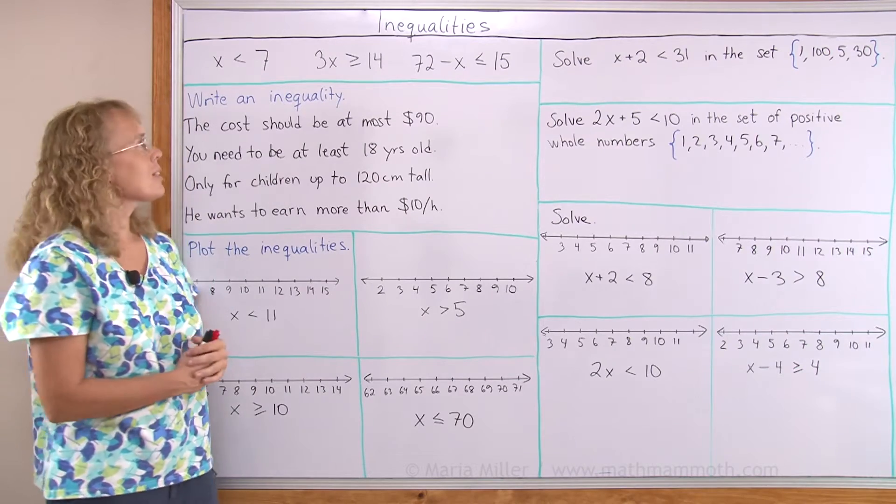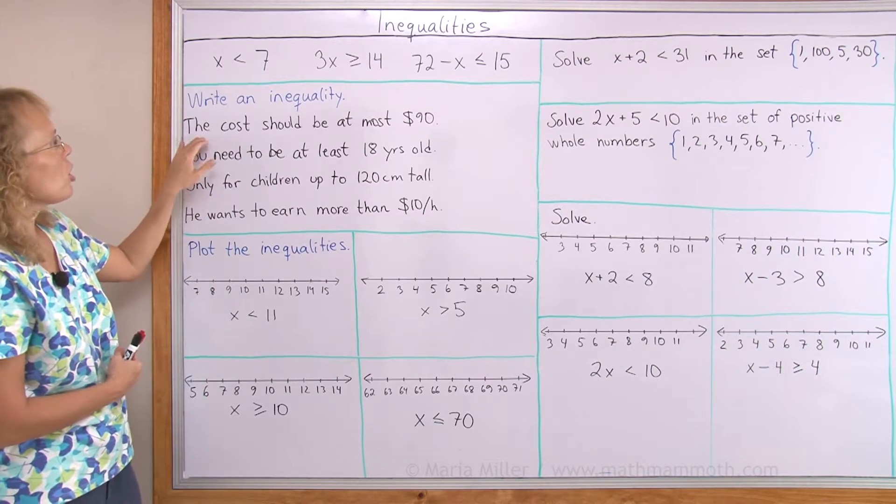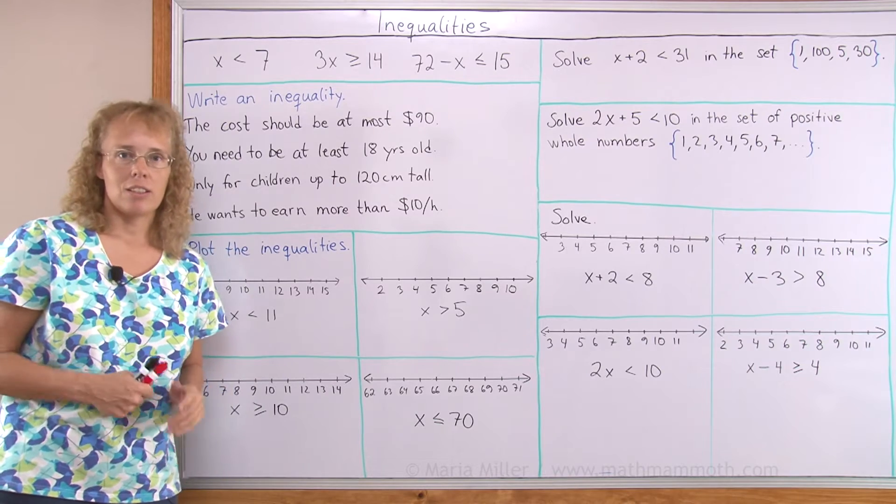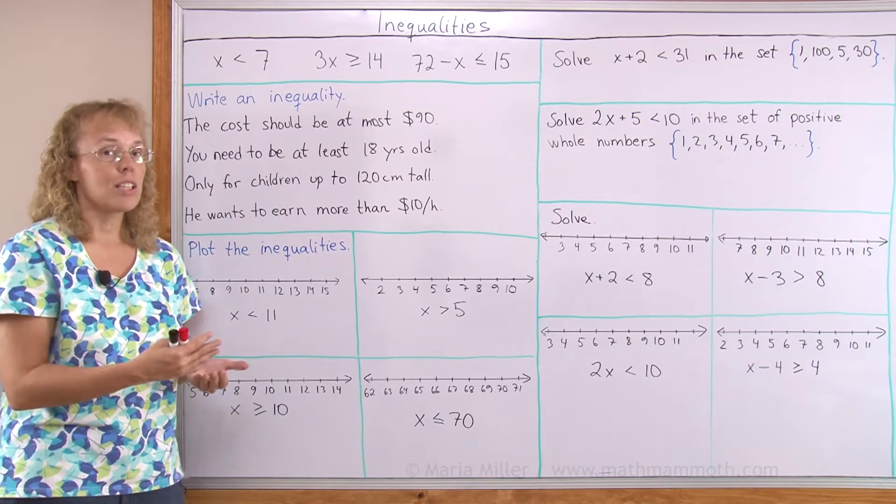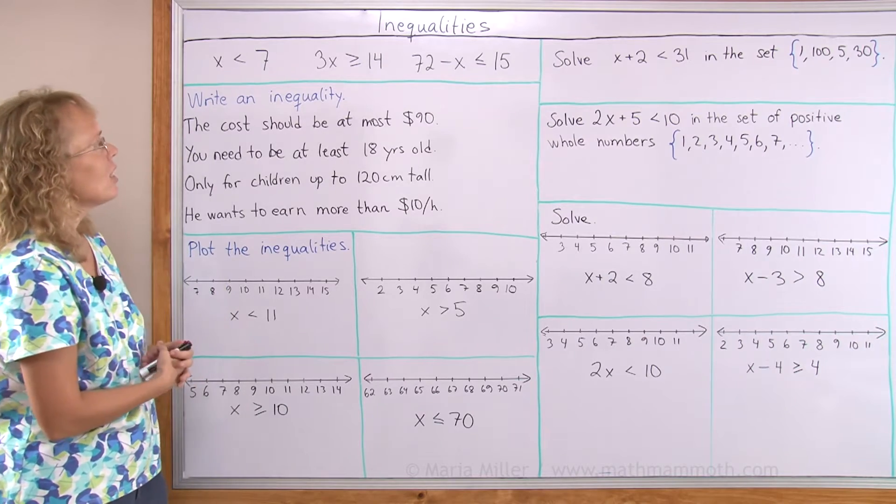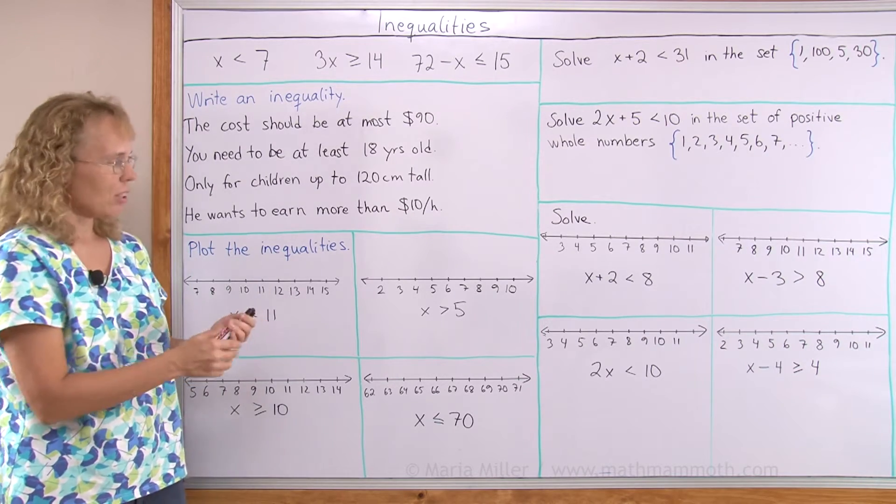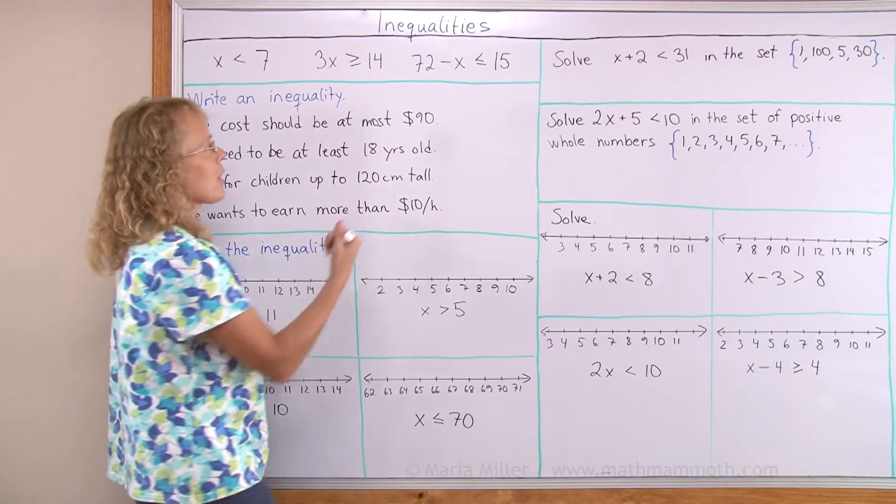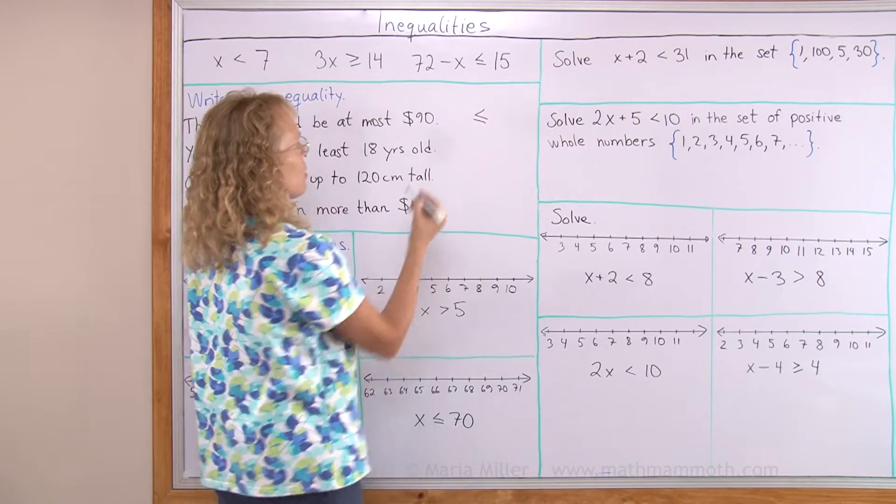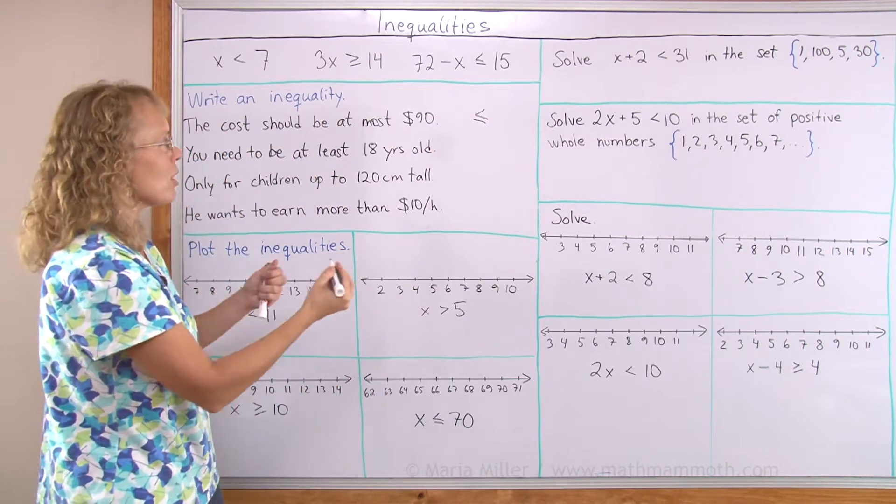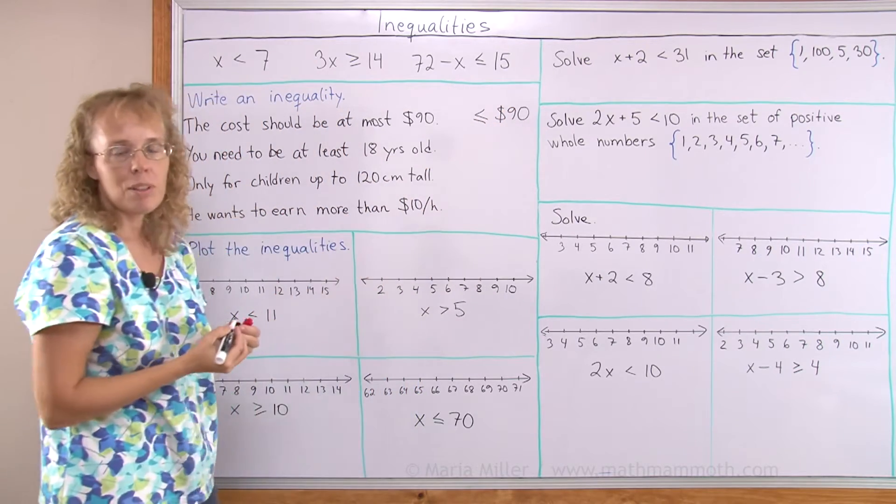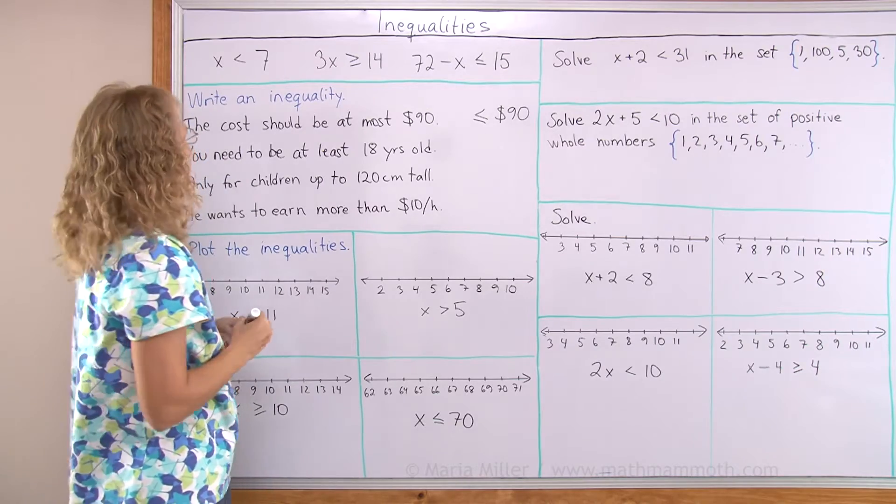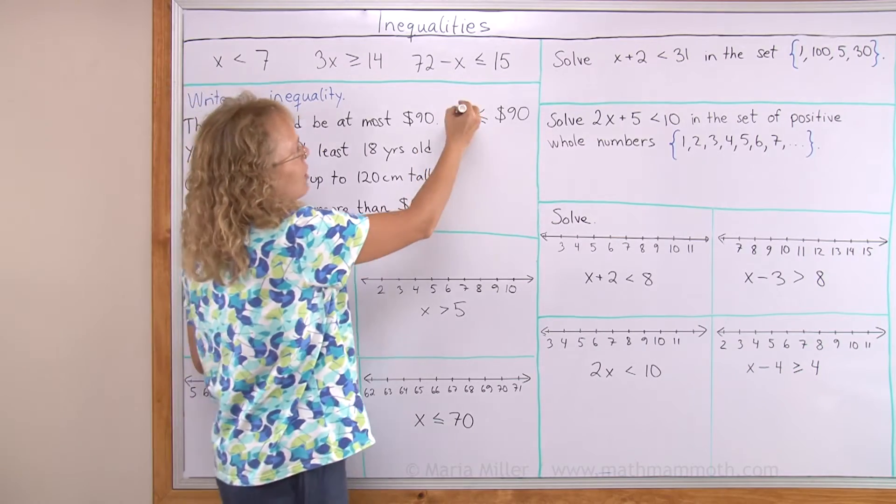Okay, let's first write some inequalities. The cost should be at most ninety dollars. So the cost should be less than ninety dollars or it could be exactly ninety dollars. It could be less than or equal to. So we need to use the sign less than or equal to. The cost should be less than or equal to ninety dollars. We will put the variable here and we can choose any letter we wish. Since it says cost I'll choose C.